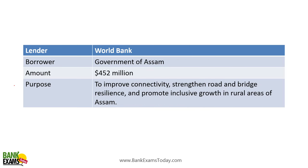World Bank lent money to the Government of Assam — 452 million dollars — with the purpose to improve connectivity, strengthen roads and bridges, promote bridge resilience, and promote inclusive growth in rural areas of Assam.